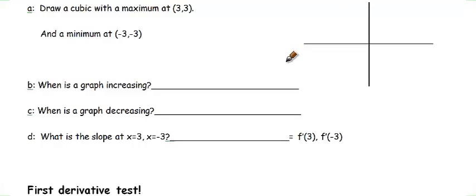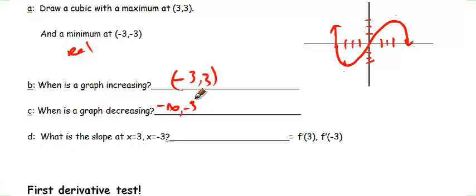Let's go through this. I'll draw a cubic with a maximum at 3, 3, and a minimum at negative 3, negative 3. I do mean relatives on these. So what we're going to have is a graph that looks something like this. When is the graph increasing? Well, it's increasing from negative 3 to 3, here to here. And it's decreasing from negative infinity to negative 3, and also from 3 to infinity. It's going down here, and it's going down here. People sometimes have trouble with that being positive infinity. Usually not by the time they get to calculus, because it's going to the right. That's why it's positive infinity.